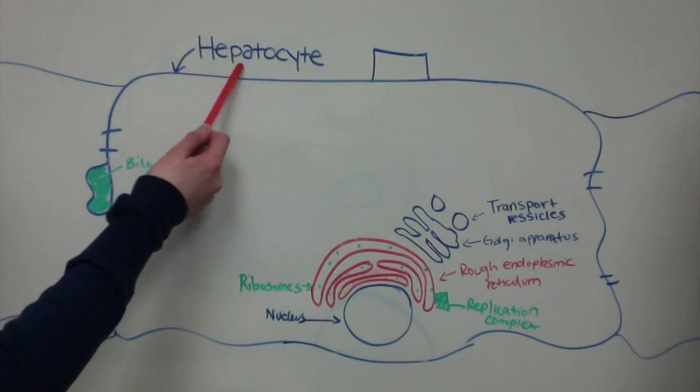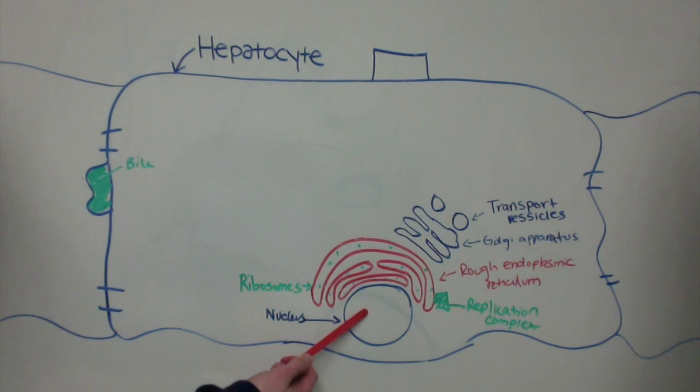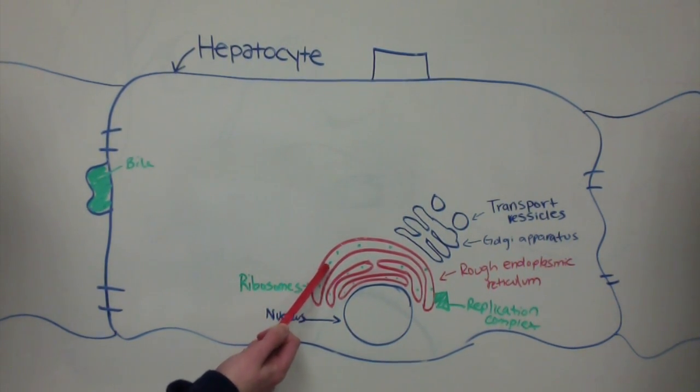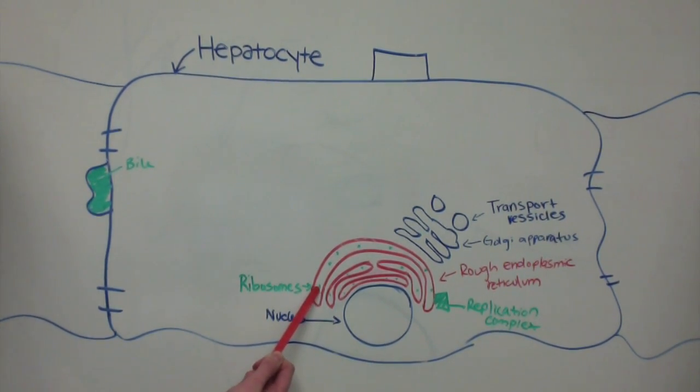Here is the structure of a liver cell. Each hepatocyte has a nucleus, rough endoplasmic reticulum, that houses ribosomes, which their function is to synthesize proteins from the messenger RNA.